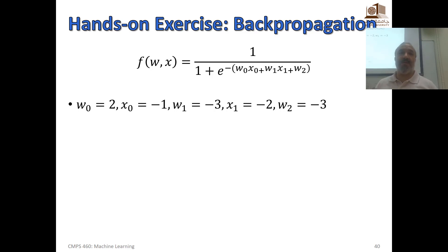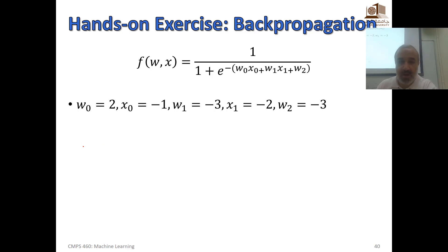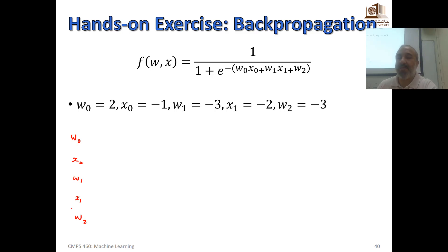What is the first step in doing backpropagation? Drawing the computation graph. We need to draw the computation graph. How can we draw it? We start with the inputs. The inputs here are W0, X0, W1, X1, and W2 — these are the five inputs.